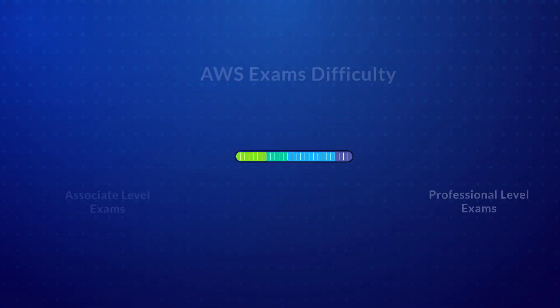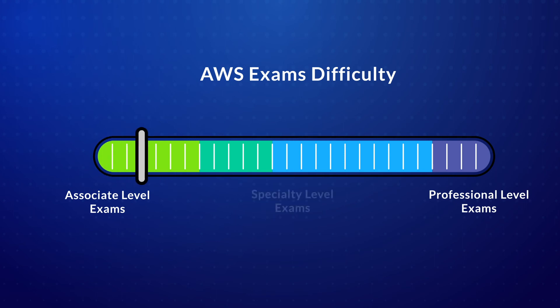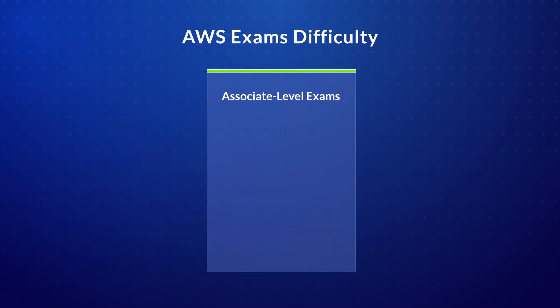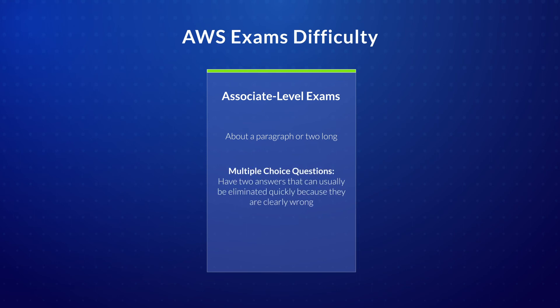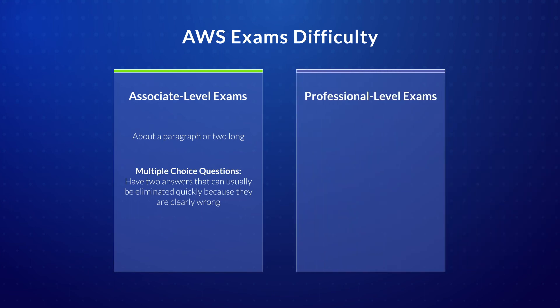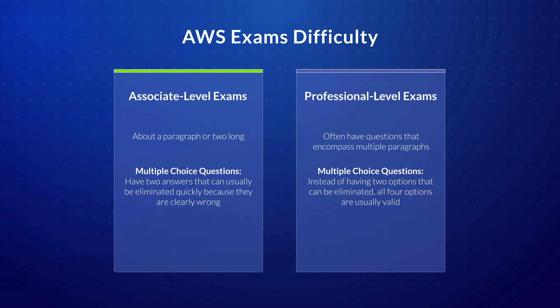If you put the AWS exams on a scale measuring difficulty, the Specialty Level exams sit about halfway between the Associate Level and the Professional ones. The Associate Level exams are about a paragraph or two long, and for multiple-choice questions have two answers that can usually be eliminated quickly because they are clearly wrong, leaving two options that are at least somewhat plausible. In contrast, the Professional Level exams often have questions that encompass multiple paragraphs — it's an exercise in reading comprehension. For those, all four options are usually valid and the correct answer depends on the text of the question.